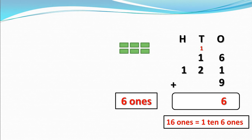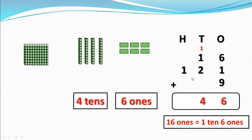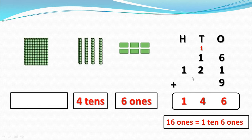Now we write 6 in the 1s column and the 1 ten we will put into the 10s column above 1. Now add the 10s: 1 plus 1 equals 2, and 2 plus 2 equals 4 tens. Now add the 100s. There is only 1 hundred, so here we write 1. The answer is 146.